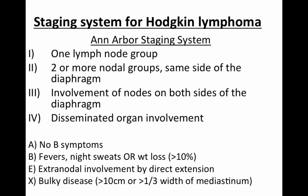The staging system for Hodgkin lymphoma is actually identical for non-Hodgkin lymphoma — it's the Ann Arbor, modified Ann Arbor staging system. Stage one is one lymph node group — not one lymph node, but one lymph node group, so two contiguous nodes in the neck count as one group. Stage two is two or more nodal groups on the same side of the diaphragm. Stage three is involvement of nodes on both sides of the diaphragm. Stage four is disseminated organ involvement, like the liver or bone marrow. The spleen does not count as an organ — it's considered a giant lymph node.